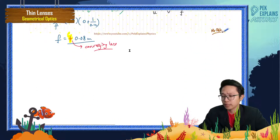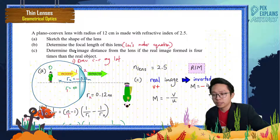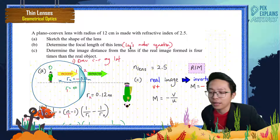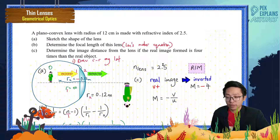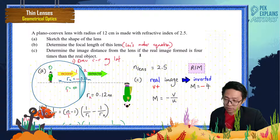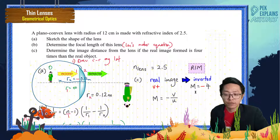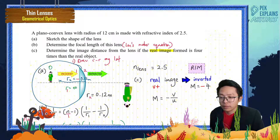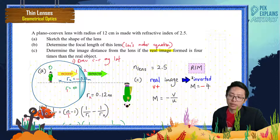Now let's move to part C: determine the image distance from the lens if the real image formed is four times the real object. Since it says real image, the image is inverted. A real image must be inverted, so the magnification m must be negative — not just four, but negative four.